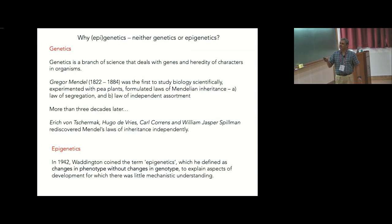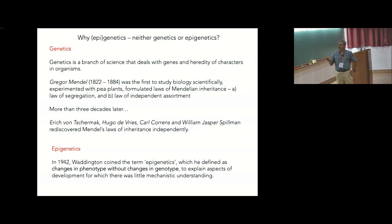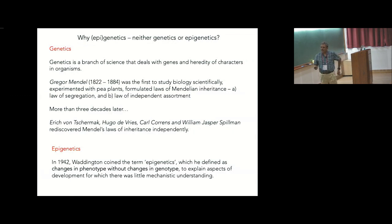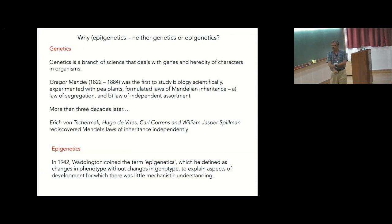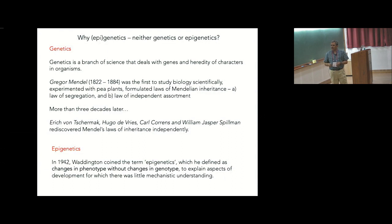Genetics, as you know, is a branch of science that deals with genes and heredity of characters in organisms, based on Mendel's laws of segregation and independent assortment, which were rediscovered by various scientists independently. In 1942, the term epigenetics was coined, described as changes in phenotype without changes in genotype, to explain aspects of development for which there was little mechanistic understanding. I often refer to epigenetics when I don't have any mechanistic explanation for a phenomenon.